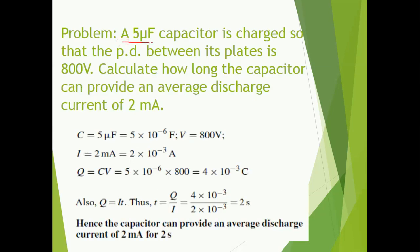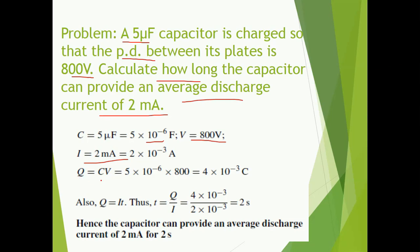A 5 microfarad capacitor is charged so that the potential difference between its plates is 800 volt. Calculate how long the capacitor can provide an average discharge current of 2 milliampere. Capacitance is given as 5 microfarad — to convert microfarad into farad, multiply by 10⁻⁶. Voltage is given as 800 volt, and current is given as 2 milliampere. The formula is Q is equal to CV.